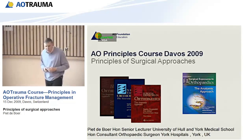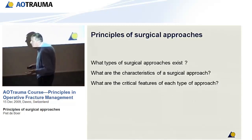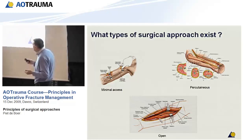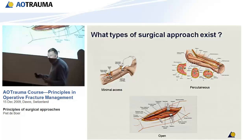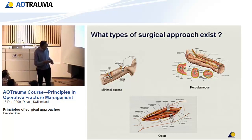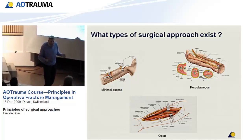So this morning, we're going to look at what types of surgical approaches exist, what the characteristics of a surgical approach are, and what the critical features are. There are really now three types of approaches used on a regular basis: the classic open approach, percutaneous approaches — pinning wrists, putting external fixators on — and the more exciting and much more challenging minimal access surgery, of which you've just seen probably the simplest example.